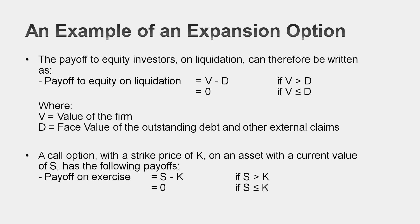If I use that limited liability and the right you have to liquidate together, I have the makings of an option. Let's assume you're the equity investor in a firm with a value V. Let's assume you have some debt outstanding with a value D. If the value of the business exceeds the debt, then when you liquidate the firm, you get the difference, V minus D. If the value of the firm is less than the outstanding debt, you have limited liability, so you have zero as your cash flow. That looks very much like a call option. If you replace V with S and D with K, you have the makings of a call option.